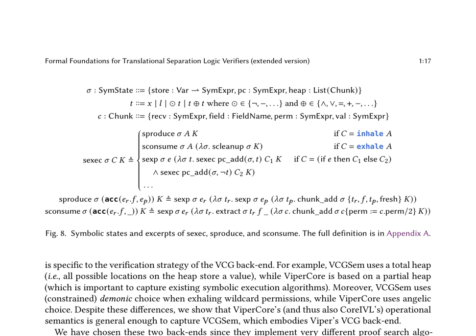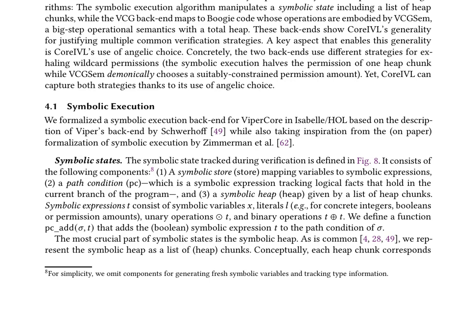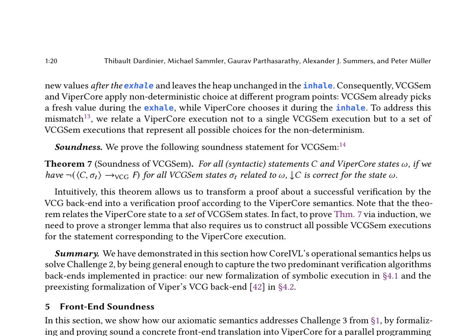The research paper focuses on the symbolic execution back-end for Viper core. The authors formalize the symbolic execution algorithm in Isabelle/HOL, which consists of a symbolic store, path condition, and symbolic heap represented as a list of heap chunks. The symbolic execution is defined via the SUGSEC function, which delegates calls to S-produce, SC-consume, S-cleanup, and SEXP functions, and can be executed inside the prover to verify a concrete program. The paper highlights the importance of angelic choice in enabling the generality of core IVL's operational semantics, and proves the soundness of SUGSEC against the operational semantics of Viper core. It also discusses the soundness of exhaling wildcards via angelic choice, which involves exhaling assertions handled by the consume function.